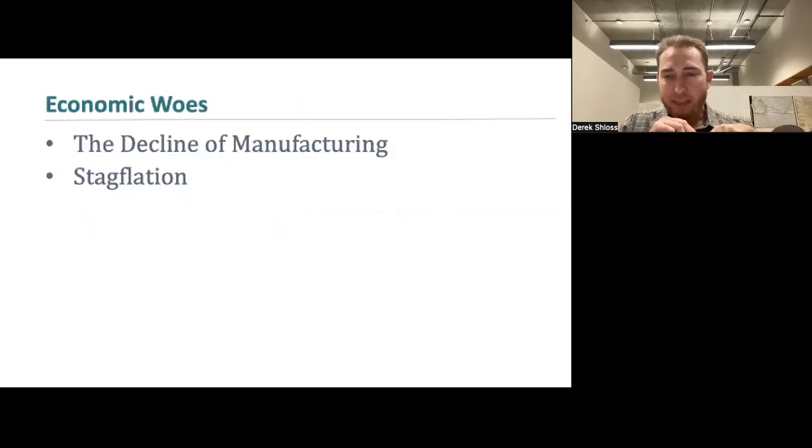So we're going to talk about the economic woes beginning basically in 1973, the early to mid-1970s. And this has to do with the decline of manufacturing and stagflation. So in the 1970s, post-war economic expansion and consumer prosperity ended. With those things ending, we saw the beginning of slow growth, especially compared to what happened before in the golden age of the American economy, and also a period of high inflation.